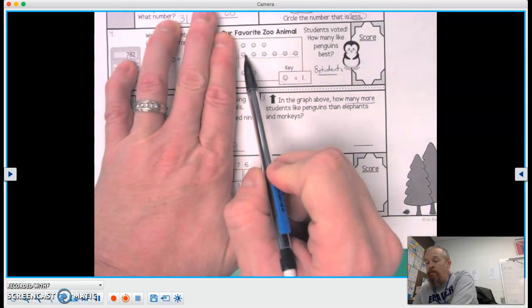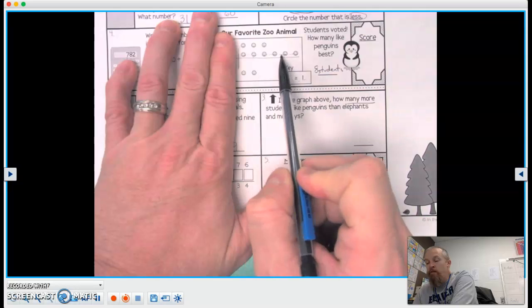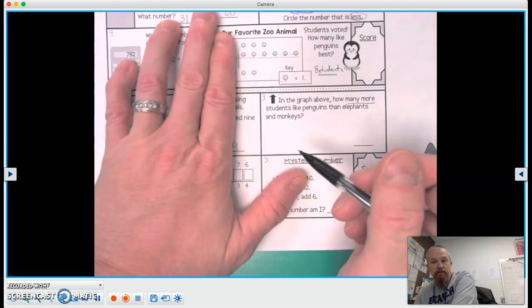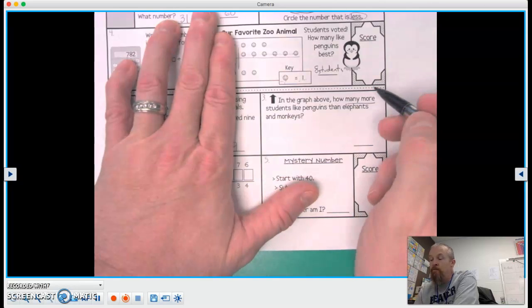Okay, now one, two, three, four, five, six. I can see that there are six more students.